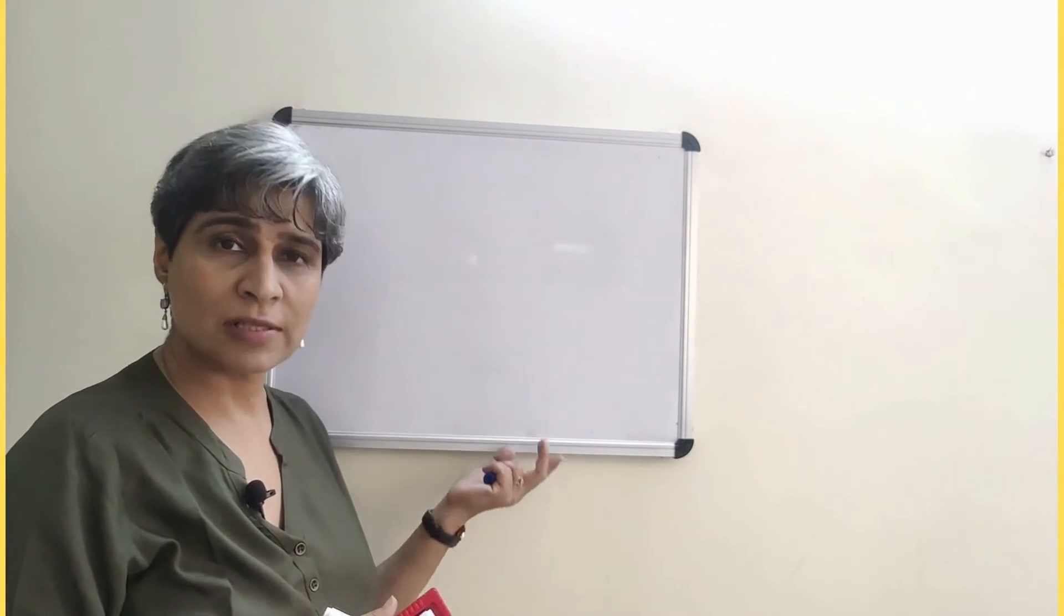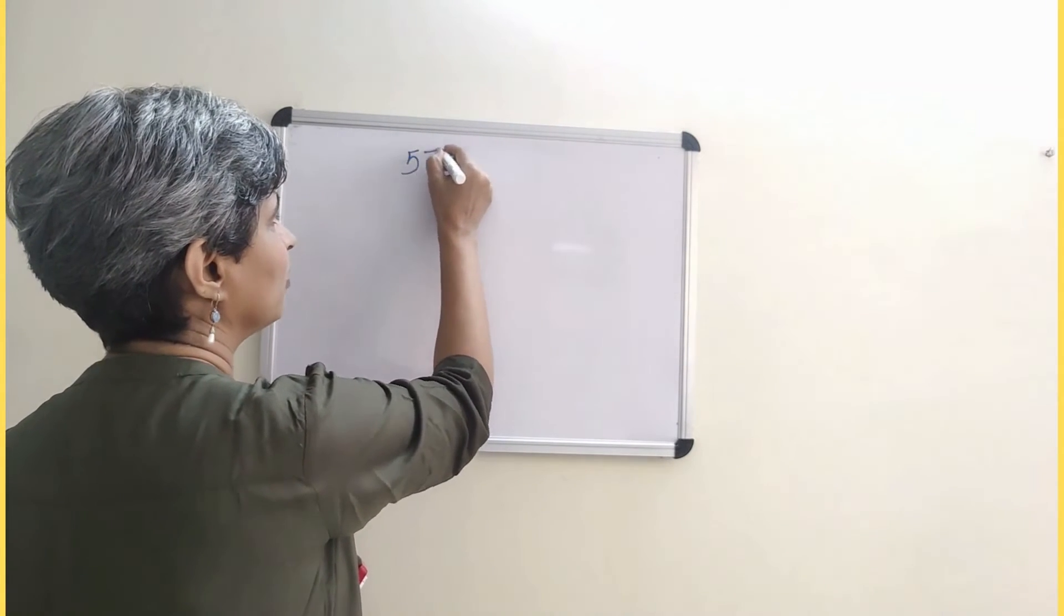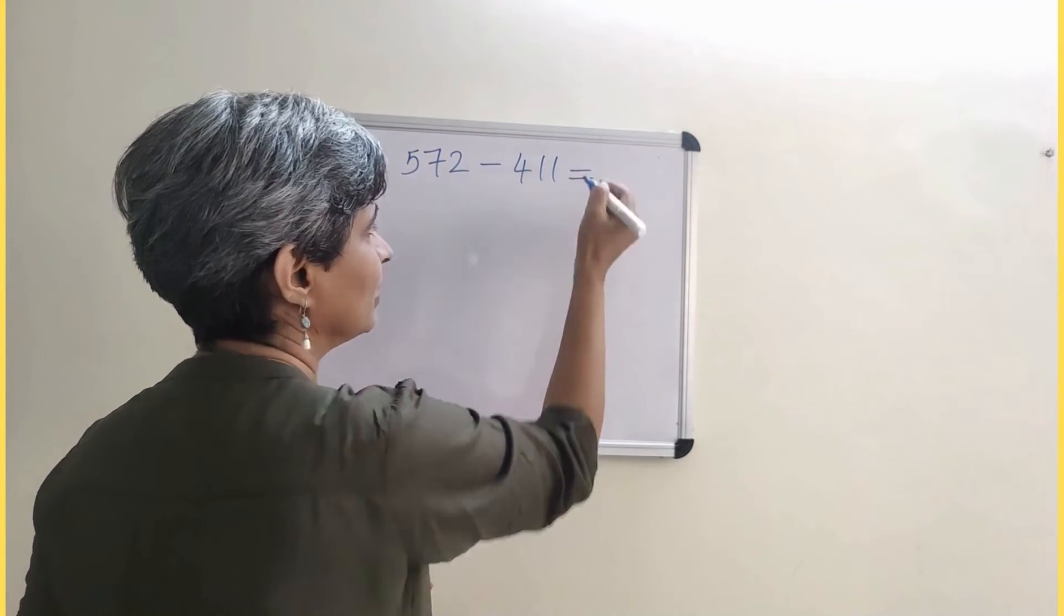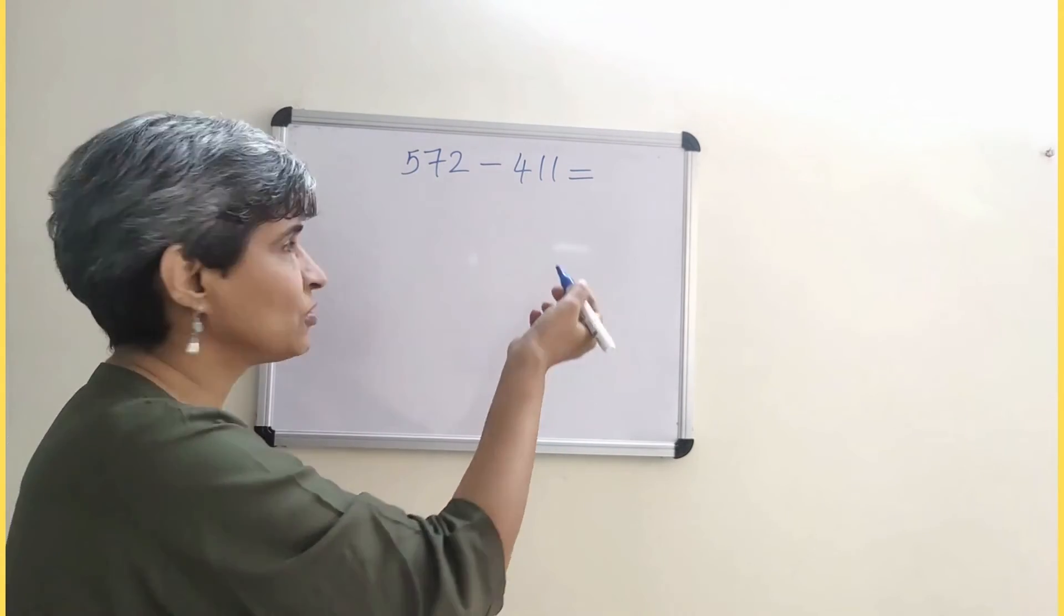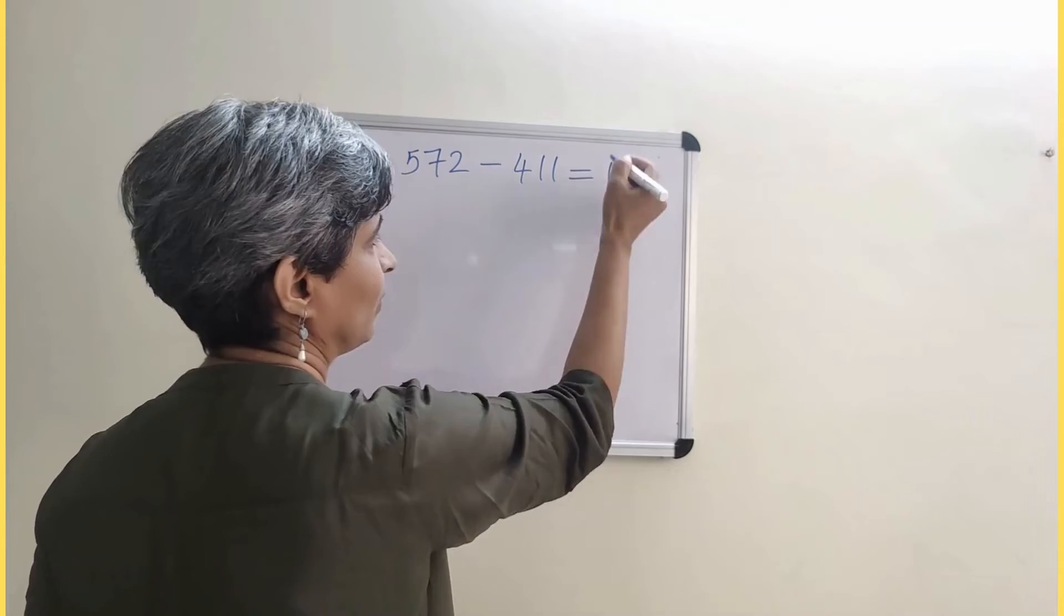I can obviously use this for subtraction also. If I'm subtracting 572 minus 411 or something like this, let's actually subtract and see. So 2 minus 1 is 1, 7 minus 1, and 5 minus 4.